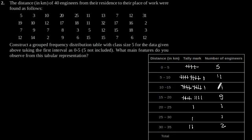Here, we can observe that the number of engineers whose residence to workplace distance lies between 0 to 5 is 5, and the number of engineers whose distance lies between 5 to 10 is 11, and so on.